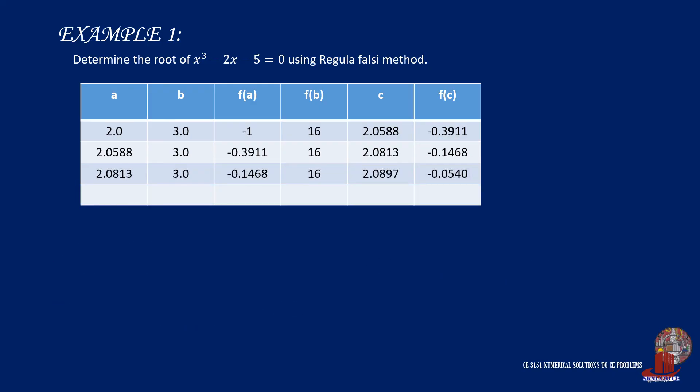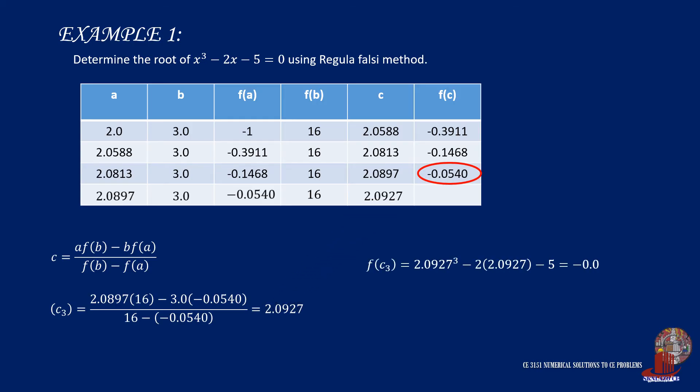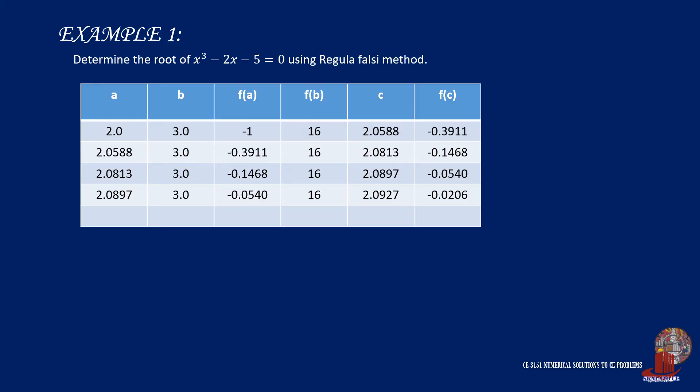Let's do the next iteration, based on the sign of the last function of c, which is a negative. Thus, c, which is 2.0897, will be replacing the former lower limit with function of a taken as -0.054. The upper limit remains a 3, and function of b is still 16. Complete the table by computing for the next approximate with the formula, and that is 2.0927. The function of c with this value turns out to be -0.0206. We can iterate further to reduce f of c.